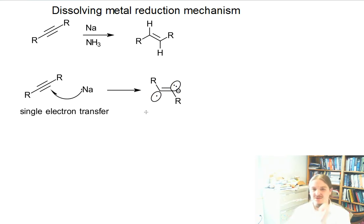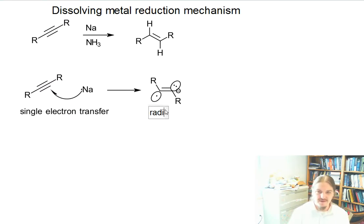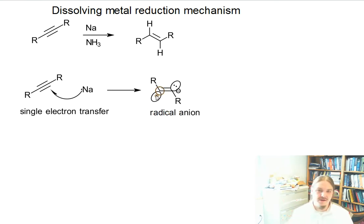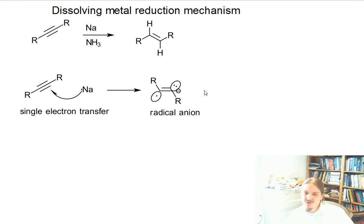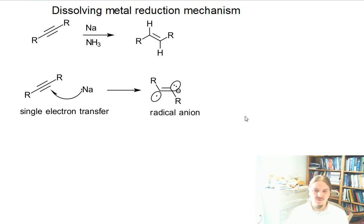And you're going to get something that looks like this — a radical anion. When that extra electron goes into the alkyne, the alkyne doesn't actually have room for it unless one of the pi bonds breaks. So one of those pi bonds is going to break and form a lone pair on one of the carbon atoms, and then that extra electron is going to be hanging out as an unpaired electron on the other carbon.